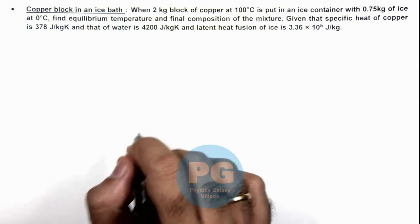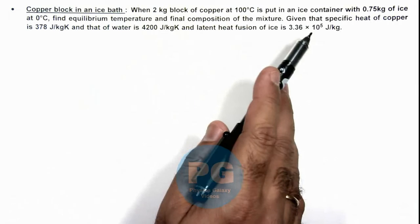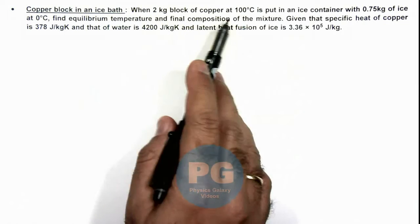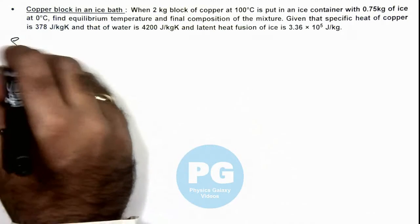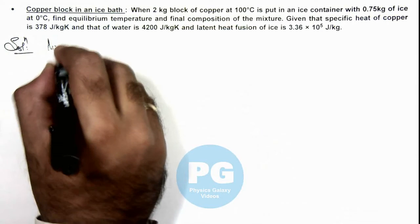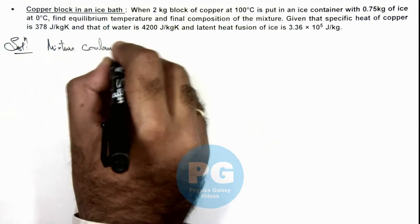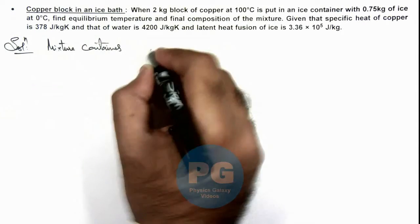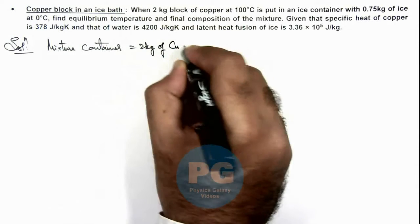So here first, we can transform all the content at 0°C with copper as well as ice in form of liquid. So initially we can write the mixture contains in which the copper block is put up this 2 kg of copper block at 100°C.